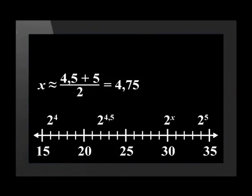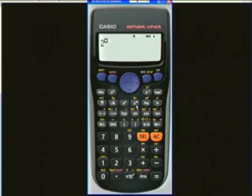Let's bisect this new interval to try to find a value closer to the value of x. So x is approximately equal to 4.5 plus 5 divided by 2, which is equal to 4.75. Let's work out 2 to the power of 4.75 on a calculator. We get 26.90868.